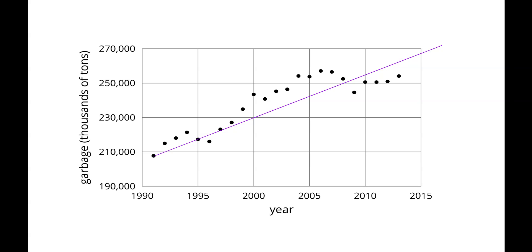Using a linear model helps us to make predictions when data is not available. From the graph, what would your prediction be for the amount of garbage in 2020? More or less than in 2010?